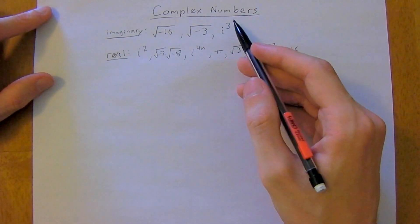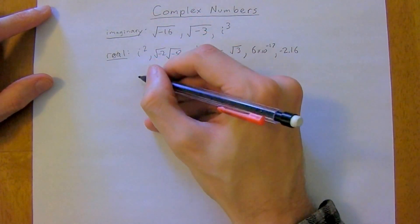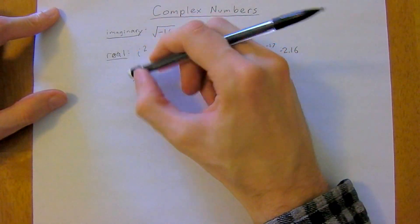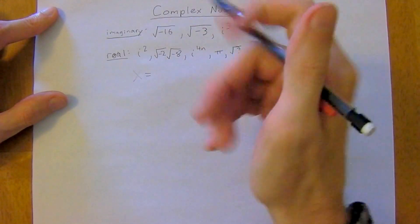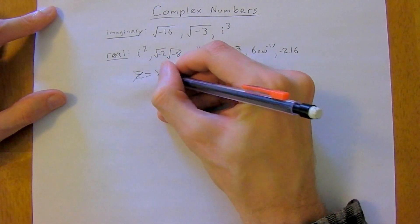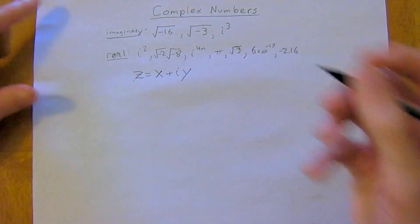So a complex number is just a combination of a real and an imaginary number, and the form we write that in is z, which is what we use. So z is equal to x plus i y.